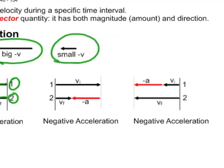Third example: I have a very large initial positive velocity, then I slowed down to a much smaller final velocity. The red acceleration vector here points to the left — that's a negative acceleration; I slowed down. The last example is also negative acceleration: I start with a small negative velocity and end with a much greater negative velocity — speeding up in the negative direction. The acceleration vector also points in the negative direction, so it's negative acceleration.